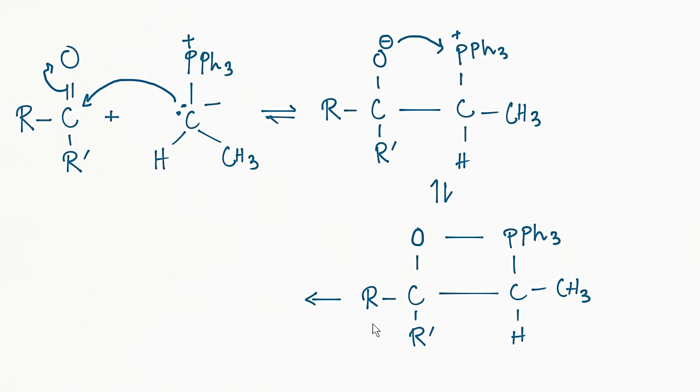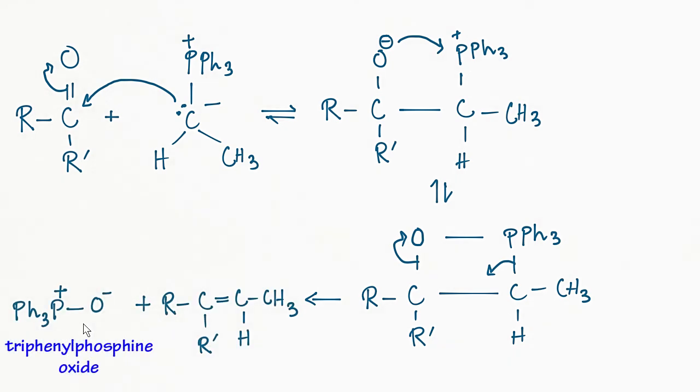Which mechanism occurs depends on a number of variables including the solvent and the structure of the Wittig reagent. In the third step, this oxaphosphetane undergoes fragmentation due to the strain to give the alkene product and triphenylphosphine oxide.